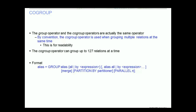Co-group. The group and the co-group operators are actually the same operator, but by convention, the co-group operator is used when grouping multiple relations at the same time.